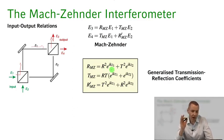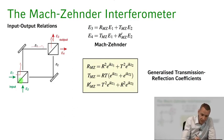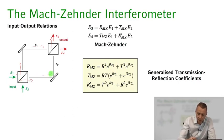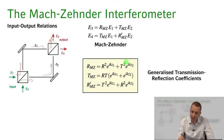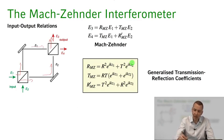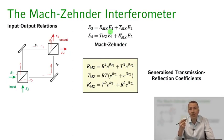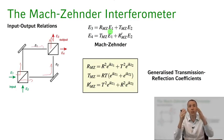But that's not the only way light on port e1 can arrive on port e3. The light can also be transmitted, propagate along path Z2, and be transmitted again at the second beam splitter, giving t² times e^(ikZ2). In general, the output field is a superposition of the input field split along those two paths.